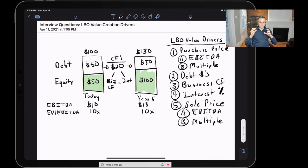So at a high level, we have these five drivers that create value in an LBO. The catch is, if you dig a little deeper, it's really just three of them.